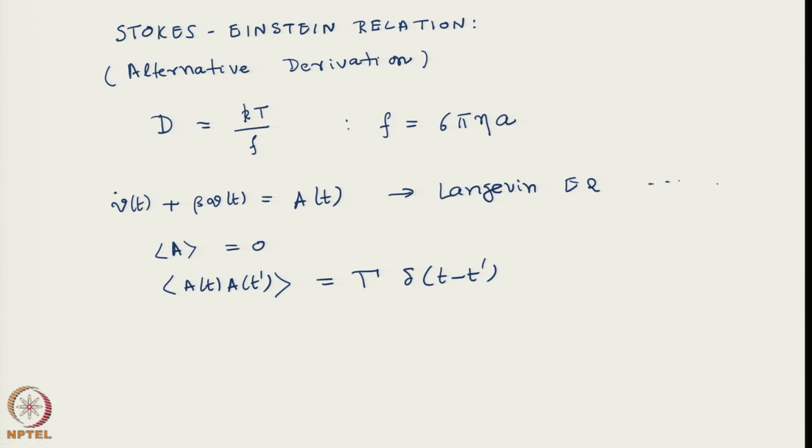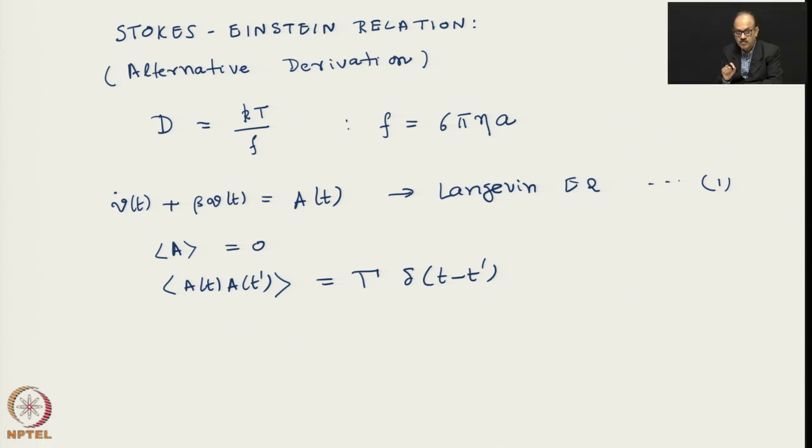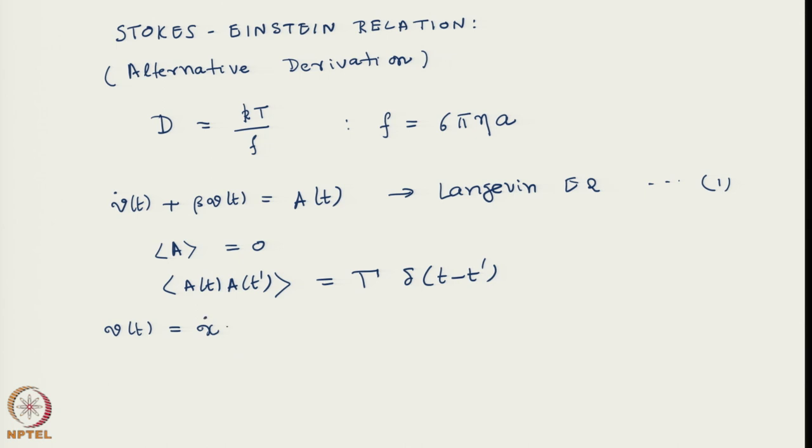Let us start with this equation 1 itself and see whether we can arrive at the diffusion law. It is a very important exercise because from a velocity equation, we will have to examine in the presence of random force how we get the position equation. For that, first thing we know that velocity itself is the time derivative of position, so we can call it as ẋ(t), where dot represents derivative with respect to time.